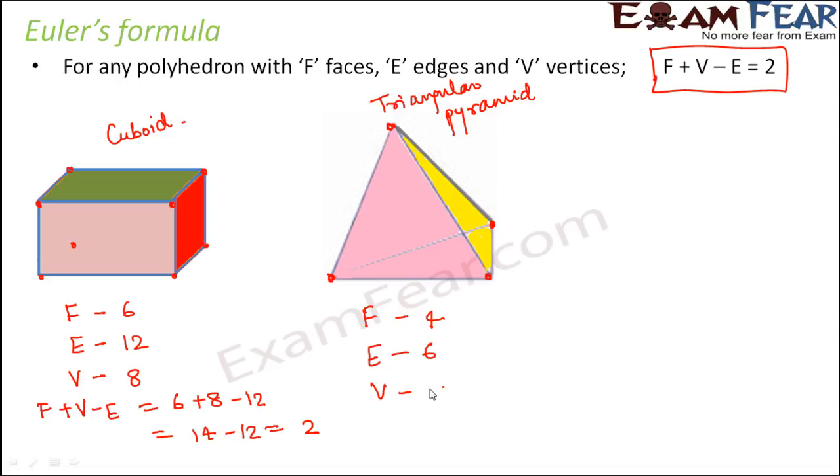So total 4 vertices. So in this case F plus V minus E is equal to 4 plus 4 minus 6. So that would be 8 minus 6 which is equal to 2. So again for a triangular pyramid also this relation holds true. Let's take one more example.